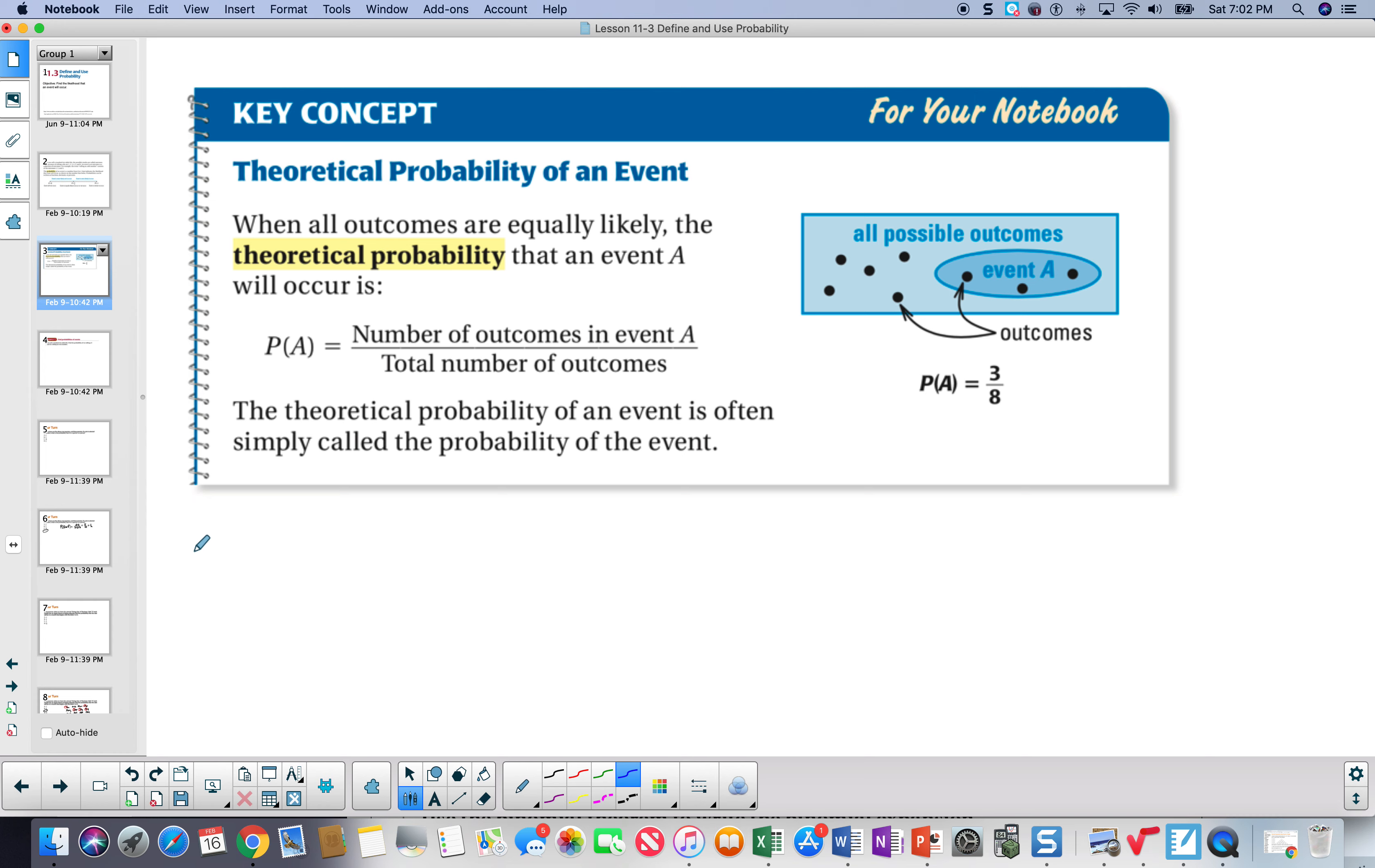Theoretical probability is the probability that the number of outcomes in event A divided by the total number of outcomes. So event A, 1, 2, 3, number of outcomes favorable, and the total number of outcomes is going to be 8 altogether. So we say this is a theoretical probability, the idea that this will likely happen.